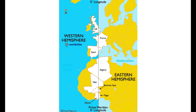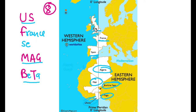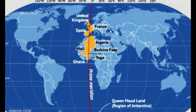The trick is quite simple. The mnemonic is 'US France maji beta.' Focus only on the pink letters — US France maji beta — and you can remember all the countries through which the prime meridian passes: UK, France, Spain, Algeria, Mali, Burkina Faso, Togo, and Ghana.